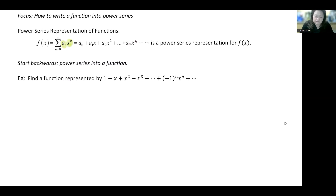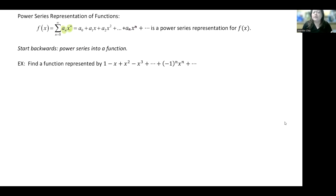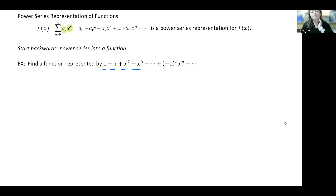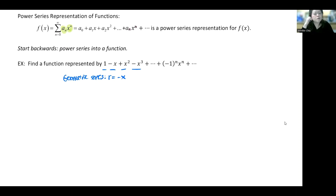It's actually easier to start backwards — start with a series and see if we can turn it into a function we recognize. Here we have a series with terms 1, -x, x², -x³. The pattern is that each term is multiplied by -x, making this a common ratio. The ratio equals -x, which makes this a geometric series with ratio r = -x.